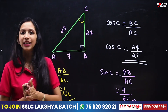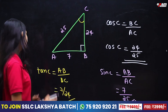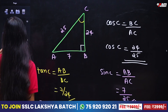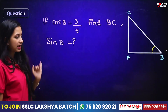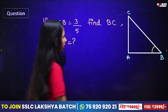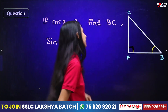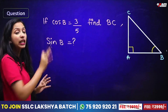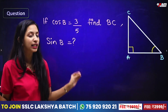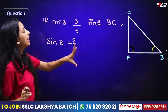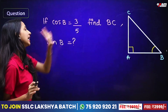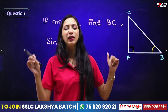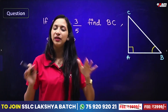Now we have all 3 ratios. If anything is not clear, I will answer your questions. You will learn how to work with right-angle triangles. Cos B is 3 by 5.